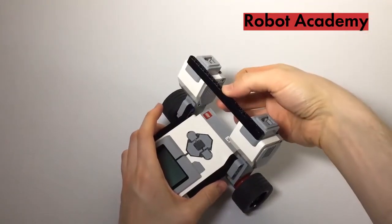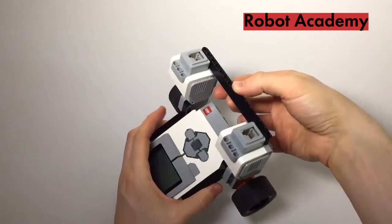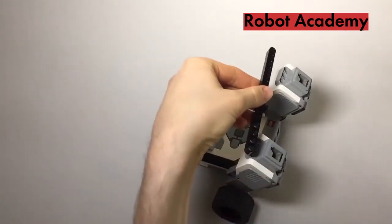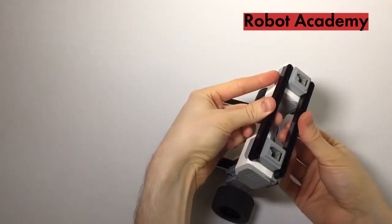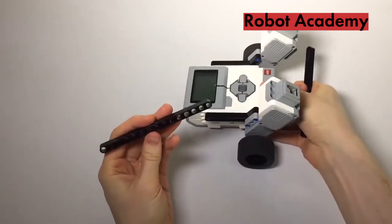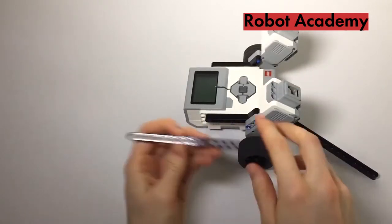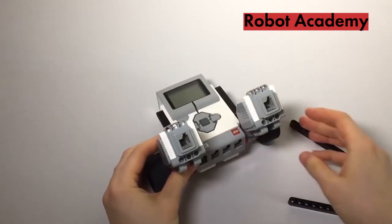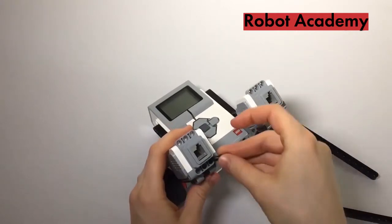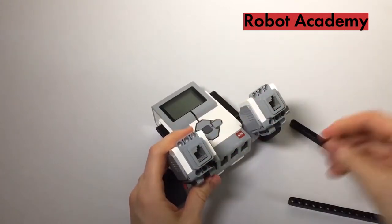We can fix that by bracing these motors across the top. So we're going to add a double brace. We're going to add two of these beams. These are the longest beams you have in your kit. They're 15 holes long. And to attach them, all we've got to do is put pegs in these motors.